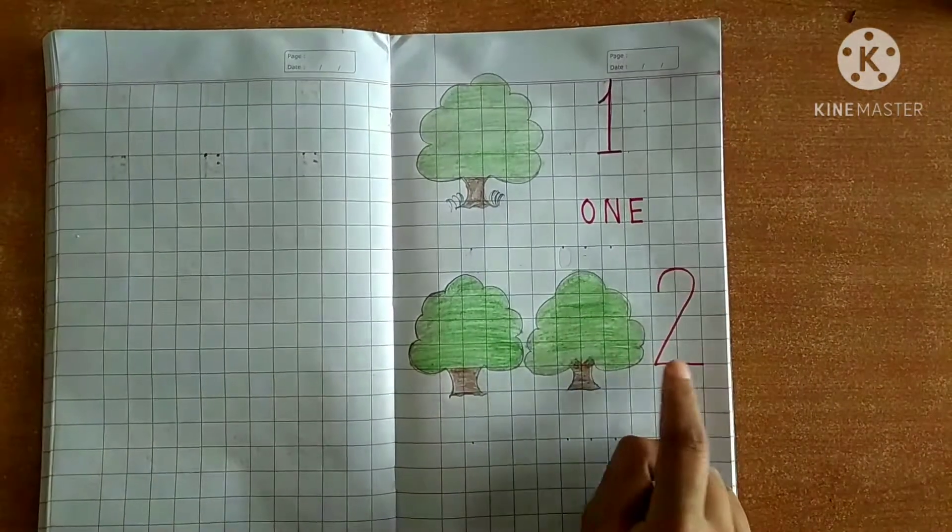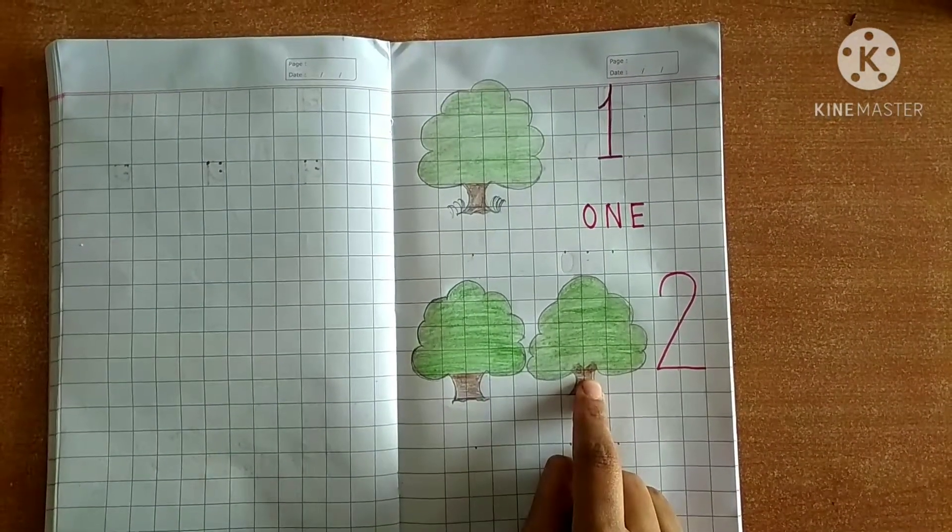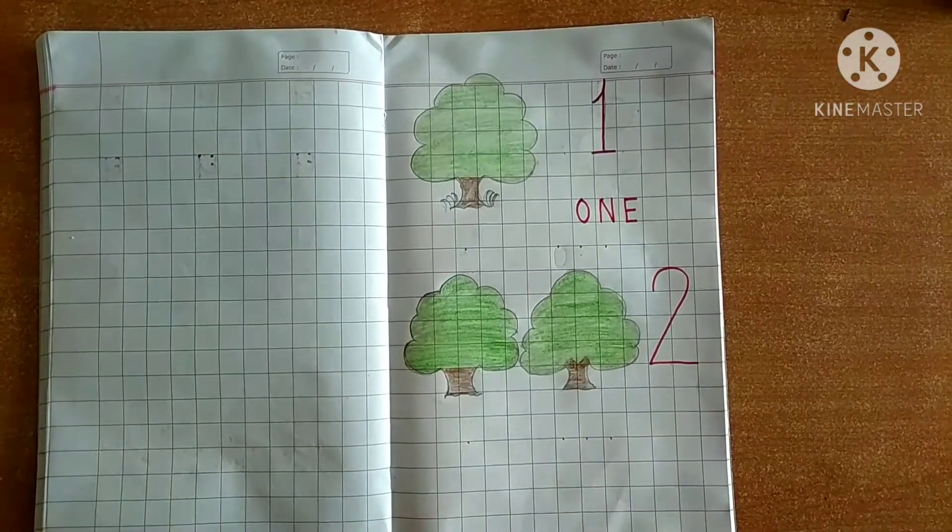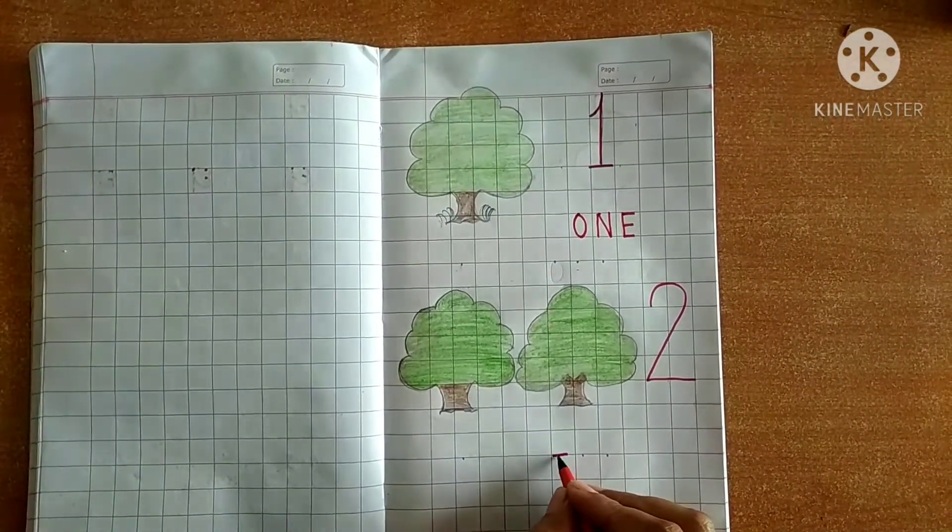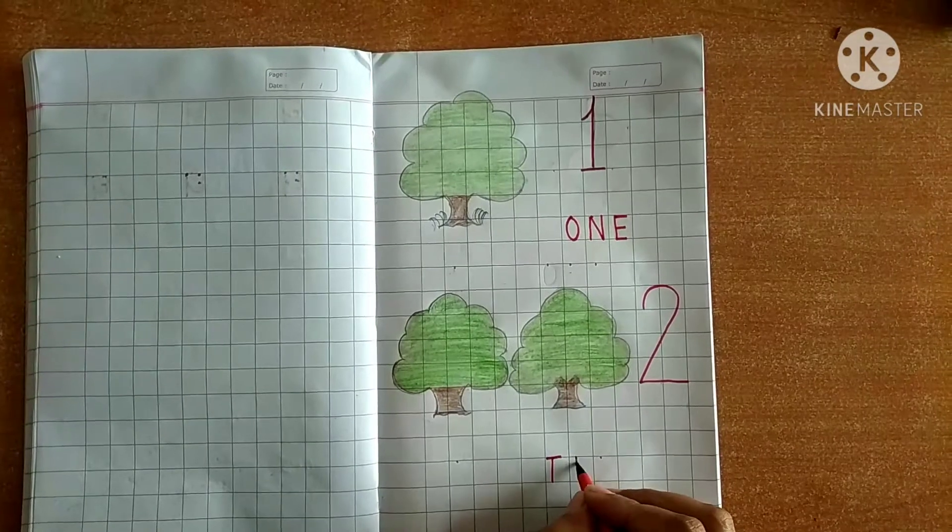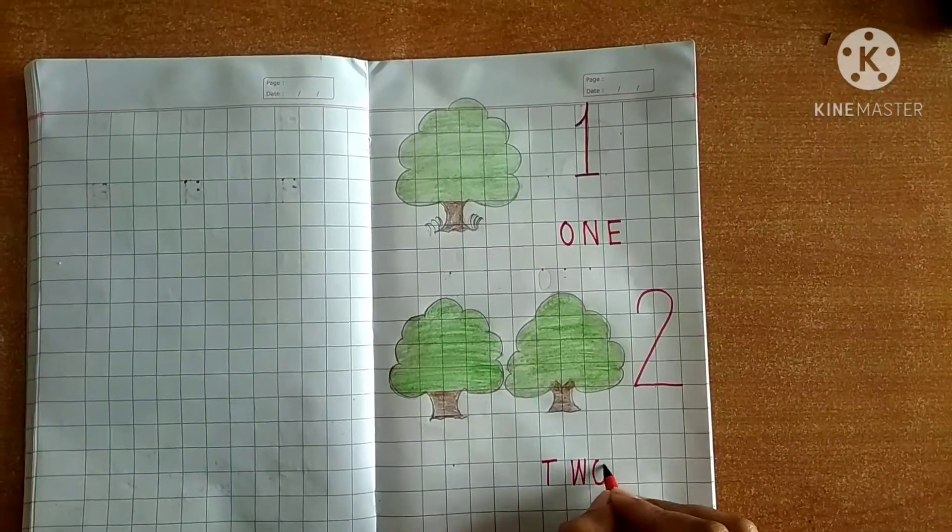Okay? Okay, two and here are two trees. Okay student and its name is T-W-O-2.